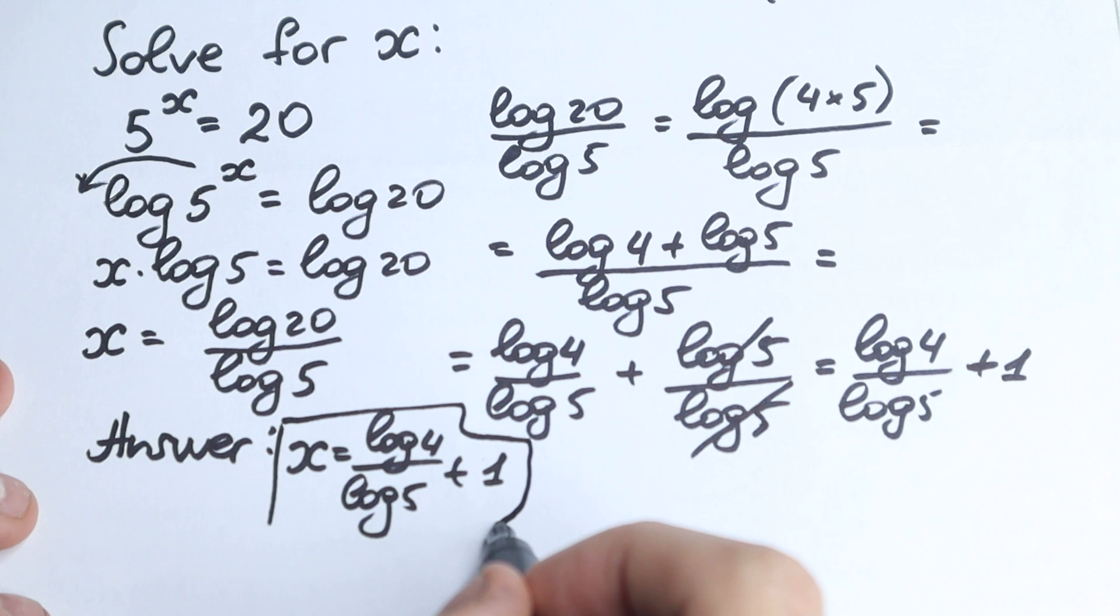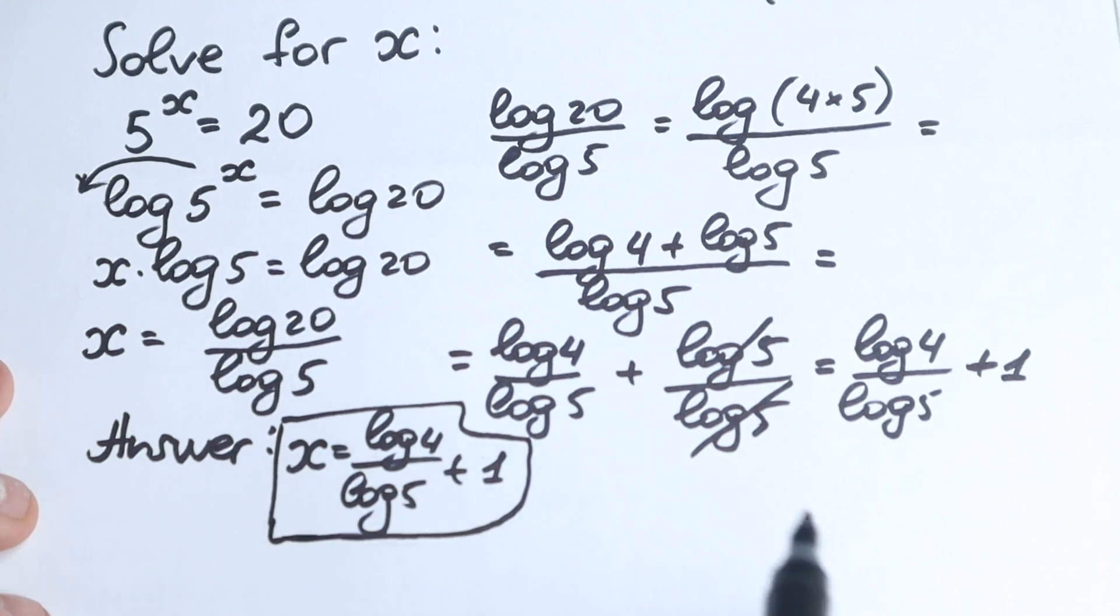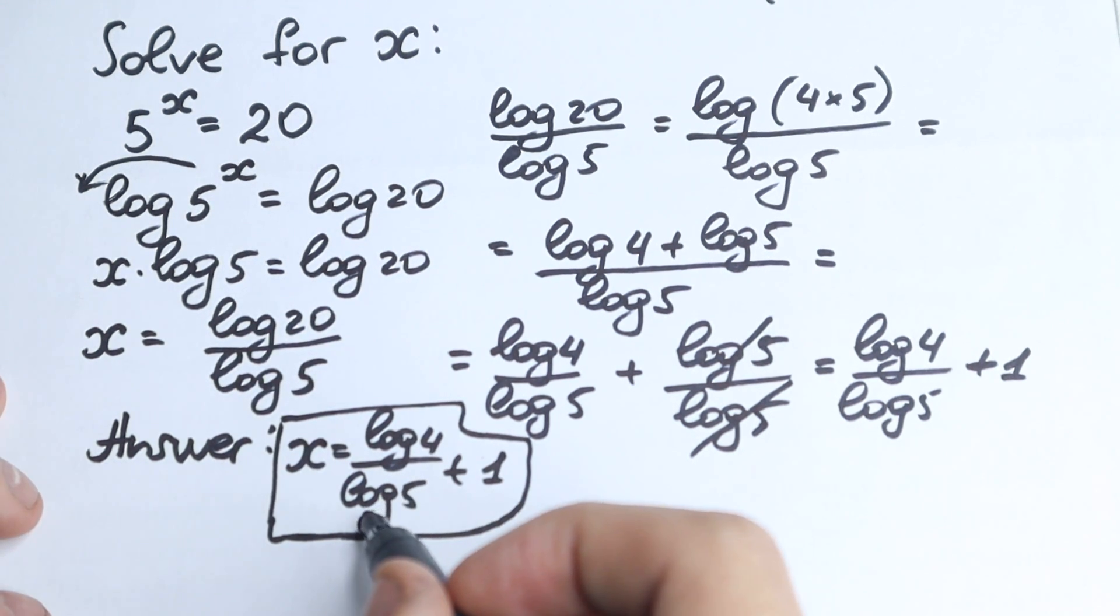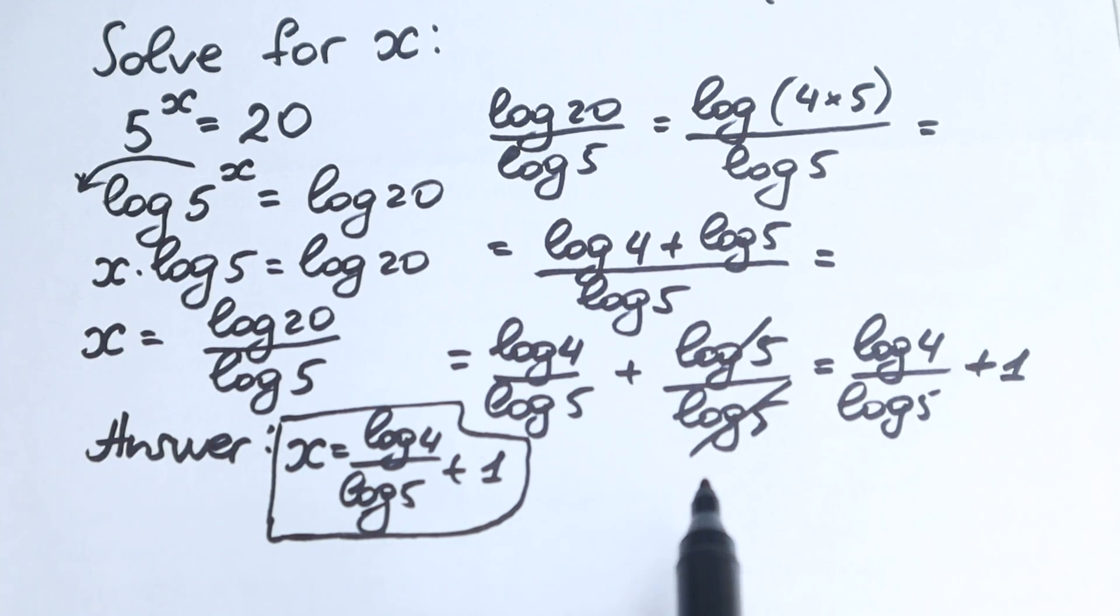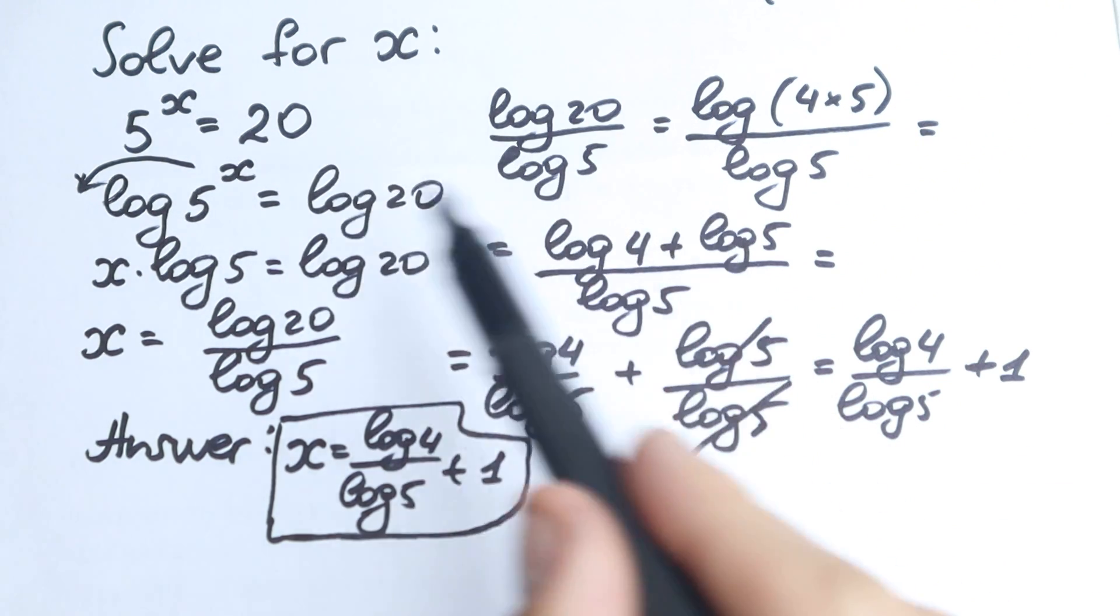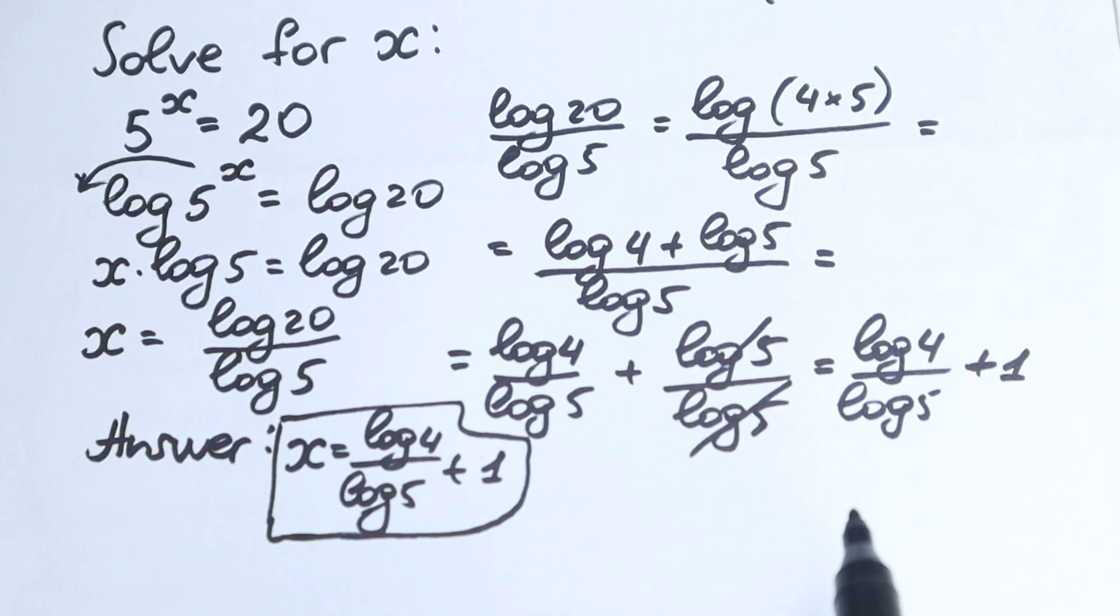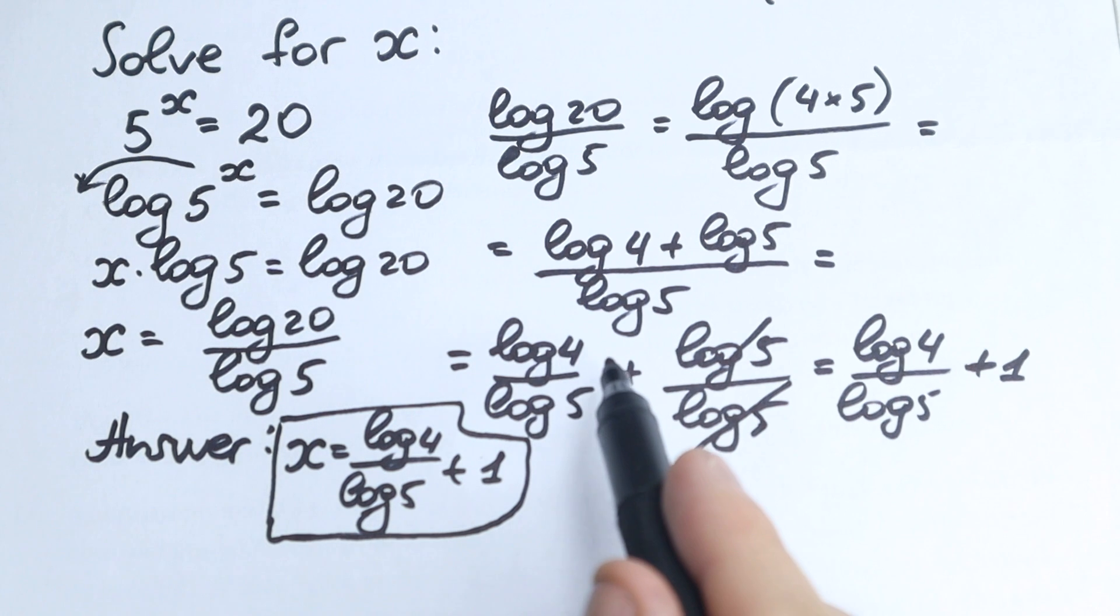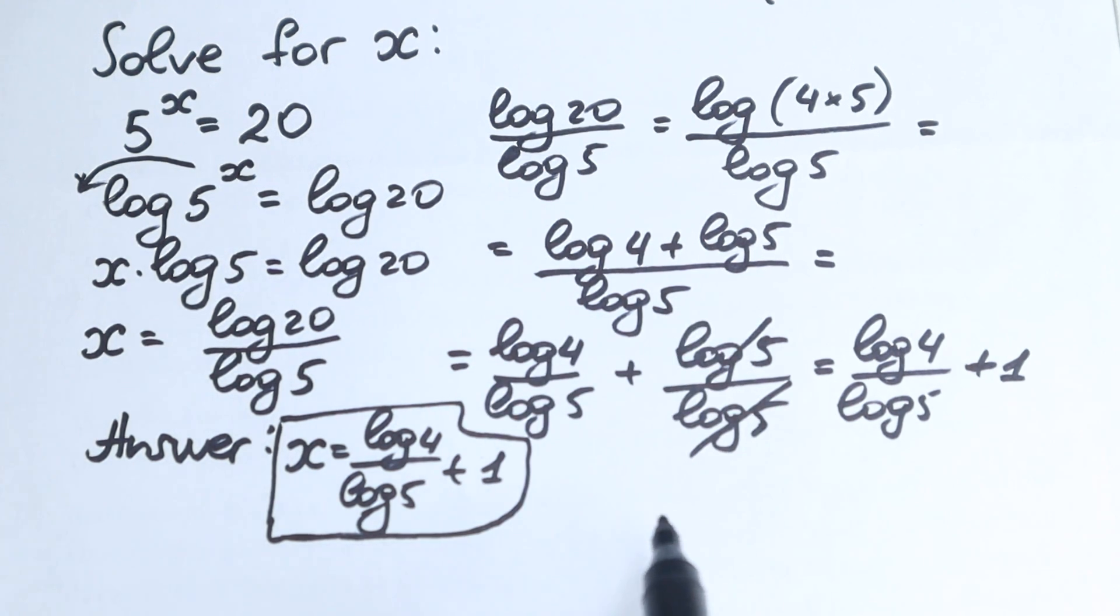I hope you understand my explanation and this solution. This is a very great question. On the first sight, this is an easy question because we have nothing hard: 5, 20, we have x, and it looks like an easy question. But as you can see with log, maybe not that easy but with really interesting tricks and moments.